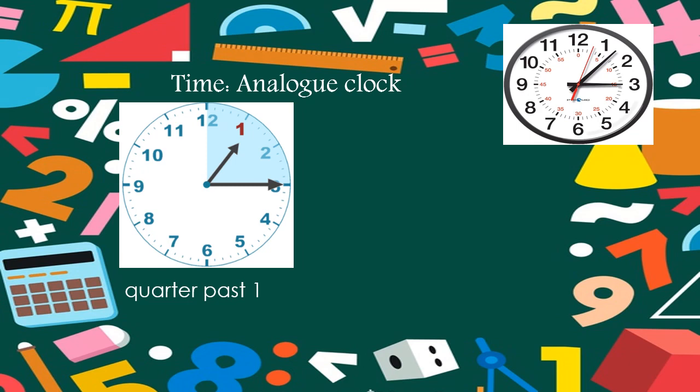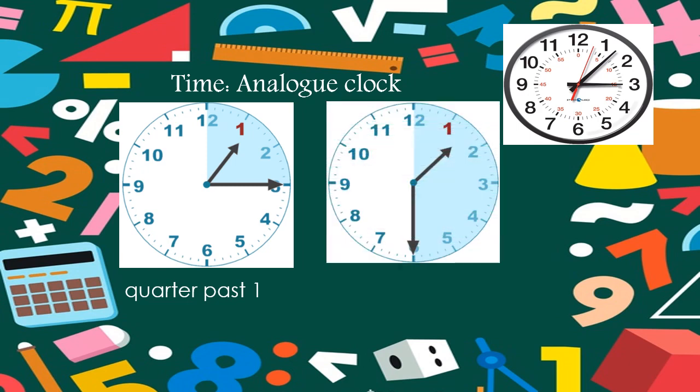Now we also have half past on the clock. Can you see the half past? Half past means the minute hand has completed half of the clock face — from 12 all the way to 6. The colored area shows half the clock is covered. So what is the time? Half past one.